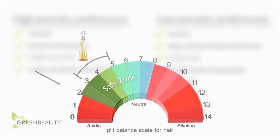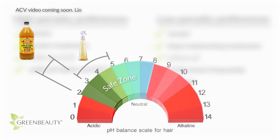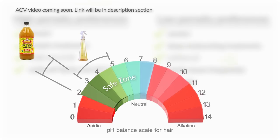Also, a quick apple cider vinegar rinse after washing and conditioning your hair is a great way to tighten and strengthen your cuticles after being weakened by the shampoo process. For low porosity hair, using an acidic spritz or an apple cider vinegar rinse on your ends is also very beneficial, because your ends are always going to be higher in porosity than the rest of your hair.